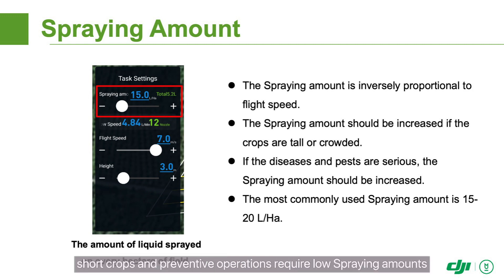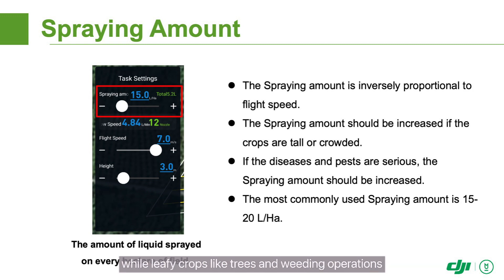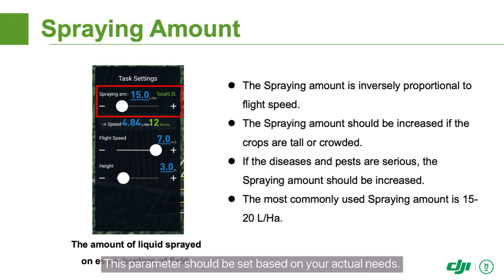Generally, short crops and preventative operations require low spraying amounts, while leafy crops like trees and weeding operations require higher spraying amounts. This parameter should be set based on your actual needs.